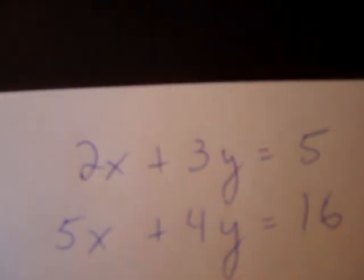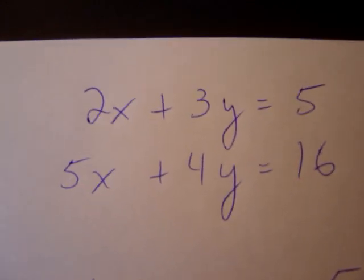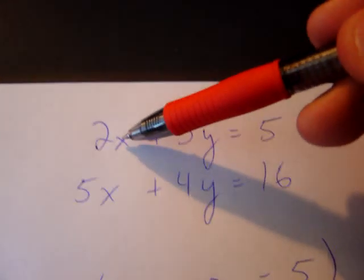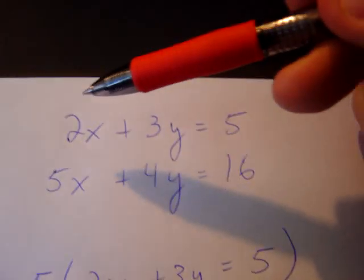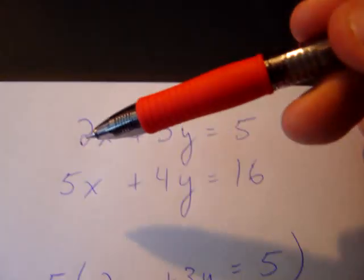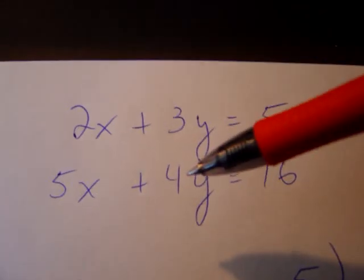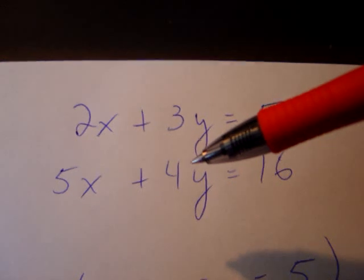We have a third scenario where you need to find a least common multiple because if you look at our coefficients of x, we have 2 and 5. Well, those aren't going to drop out if we add or subtract. You look at our y coefficients, we have 3 and 4. Those aren't going to drop out if we add or subtract.